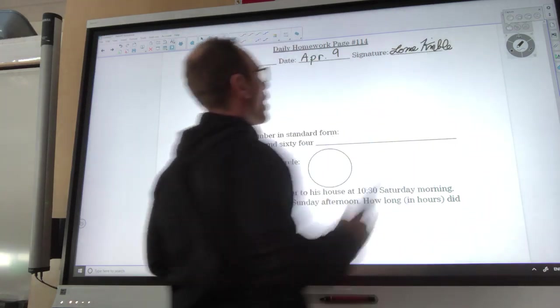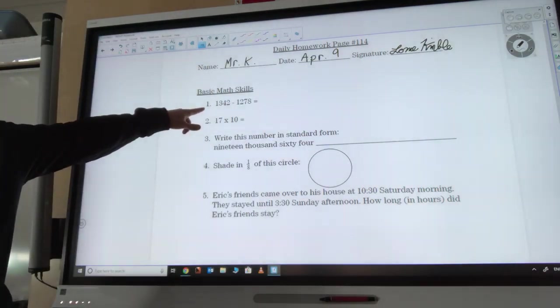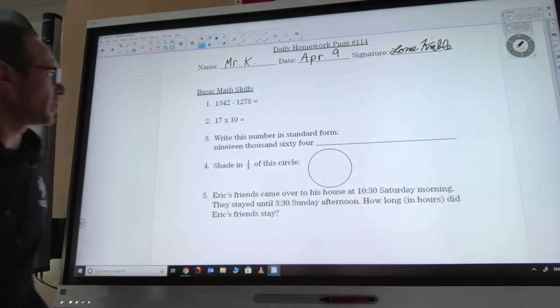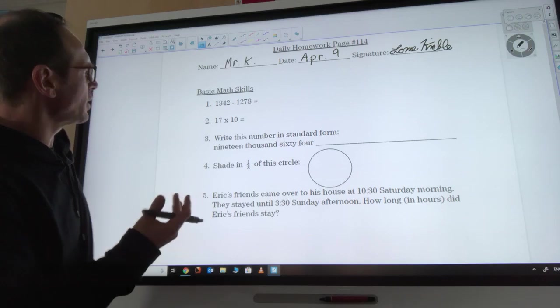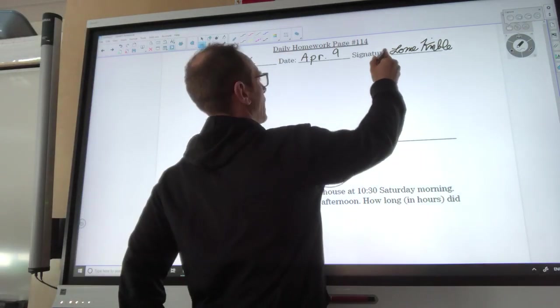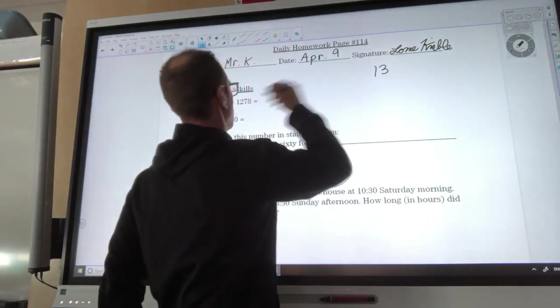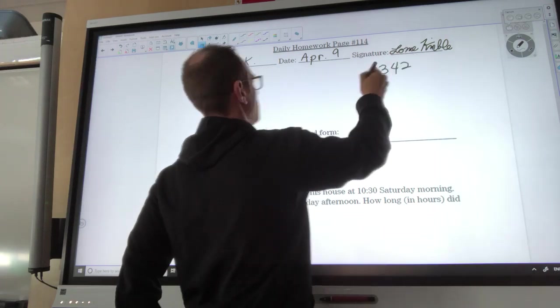We have a subtracting question to start us off: 1,342 minus 1,278. I'm gonna use just a stacking method for this and we'll do some borrowing if we have to. 1342 minus 1278.